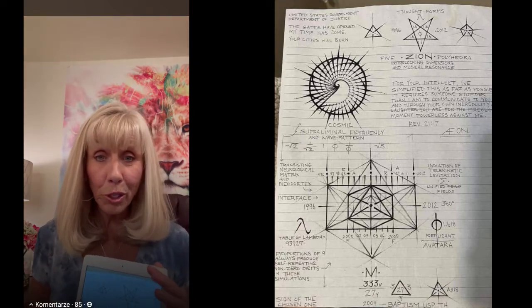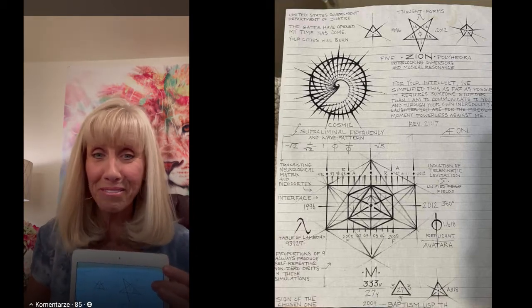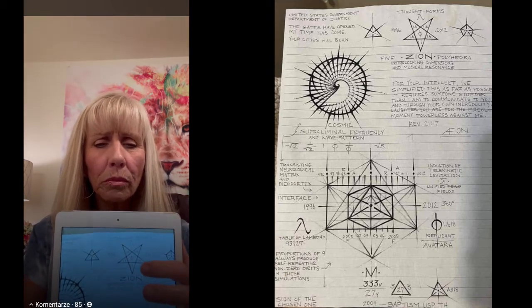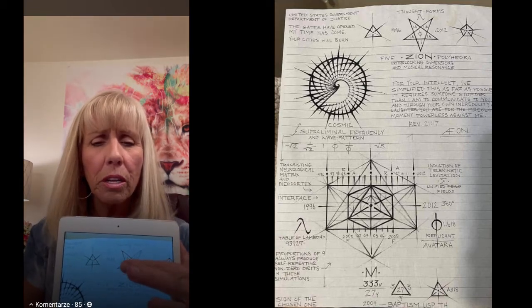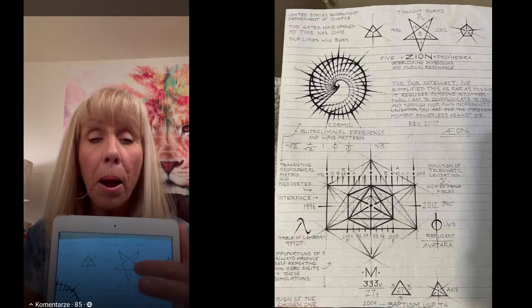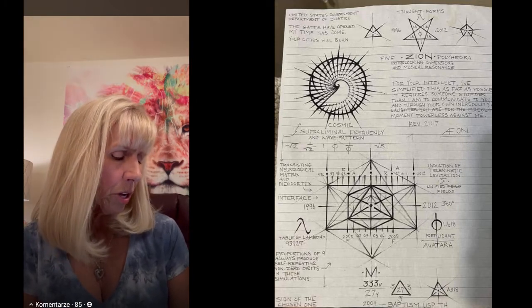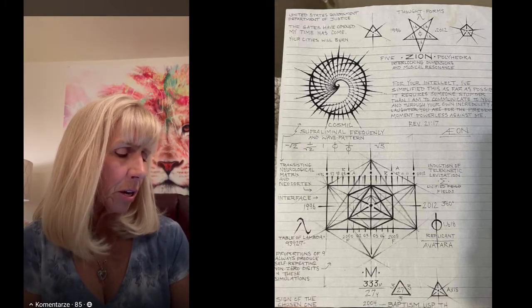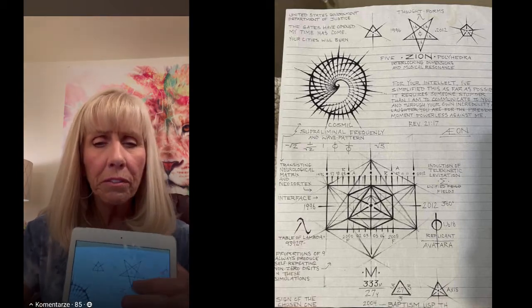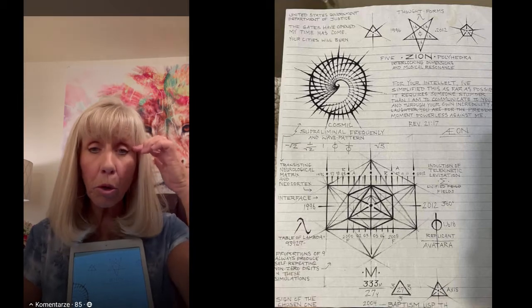He's put the phi symbol. He is calling them third dimension. They will never enter the fifth dimensional field because of their lower mass mind, their thought forms. Next to it he wrote five Zion polyhedra. We know that is fifth dimension. Zion is your temple, your mind.